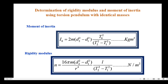The expression to calculate the moment of inertia is given here: I₀ equals 2m times (d2² minus d1²) times t0² divided by (t2² minus t1²), and the unit of moment of inertia is kilogram times meter squared.